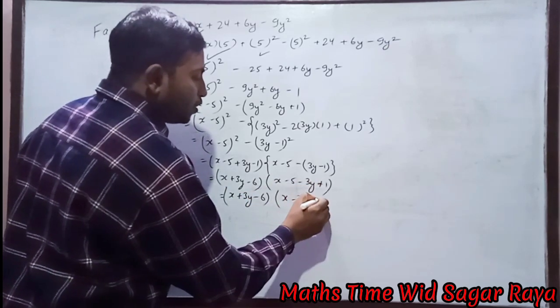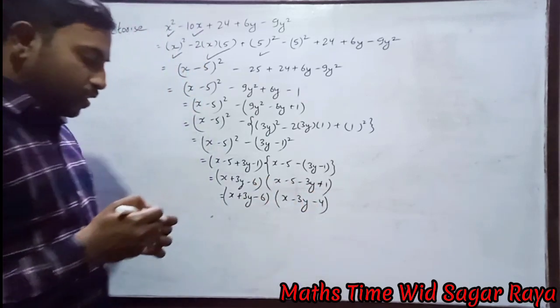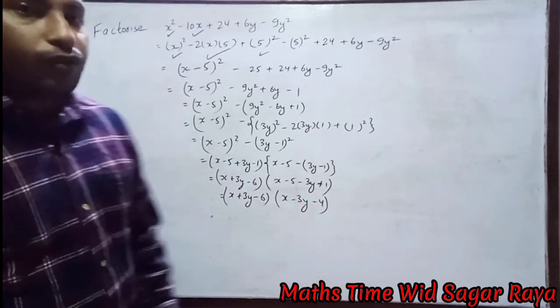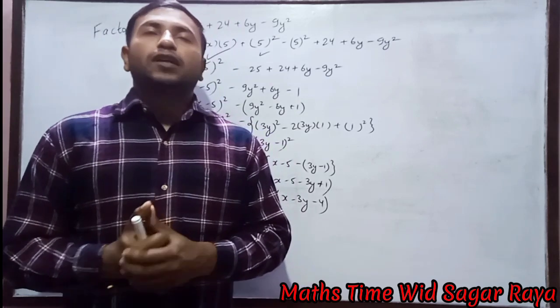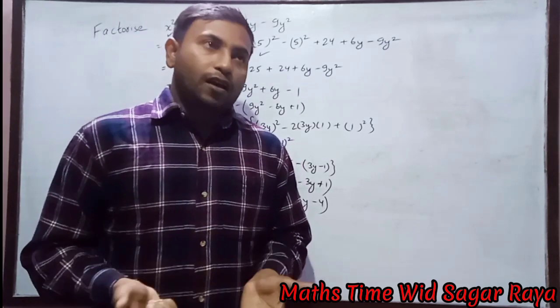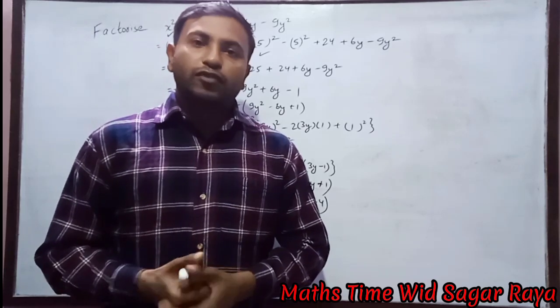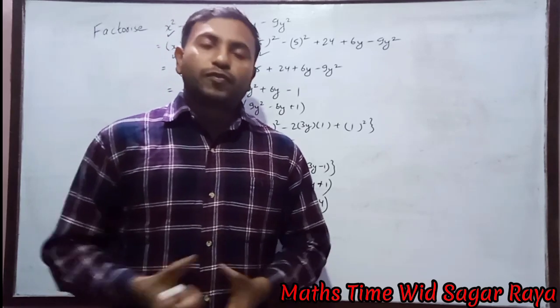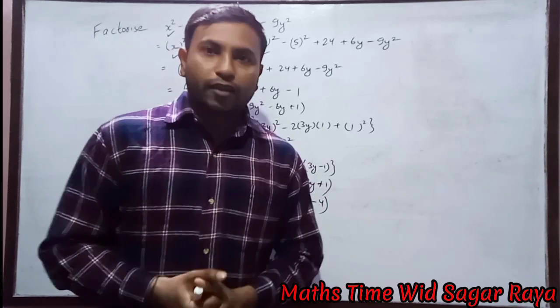So (x + 3y - 6) and then (x - 3y - 5 + 1), which is -4. So this is the required solution. If you really like my video, please like, share, and subscribe to my channel. If you're watching for the first time, don't forget to press the bell icon so you won't miss my upcoming videos. This much for today, see you in the next video. Thank you.